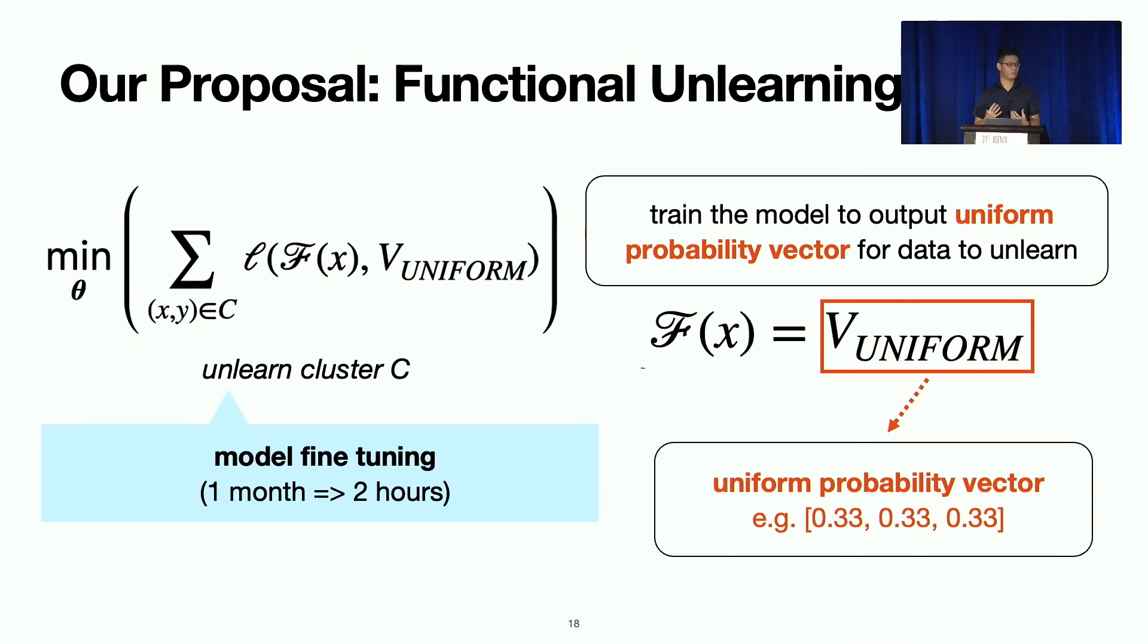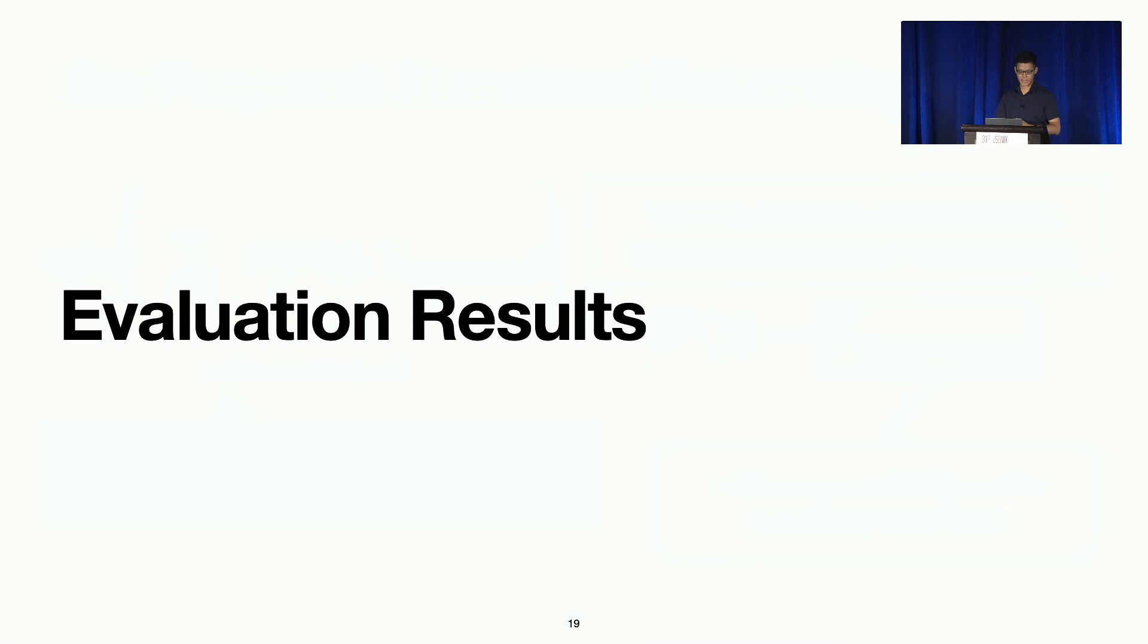And this effectively turned our learning problem into a simple fine-tuning heuristic. That's very efficient. So we can effectively reduce the cost of doing end-to-end forensics for ImageNet datasets from one month to around two hours. So this is all about the two components. Of course, there are more details in the paper. But let's take a look at the evaluation results. I'm going to be running behind time, so I'm going to speed this up a little bit. More results are in the paper, of course.